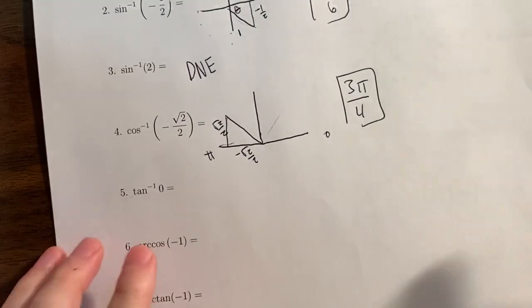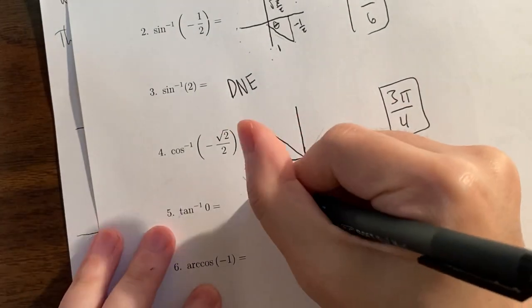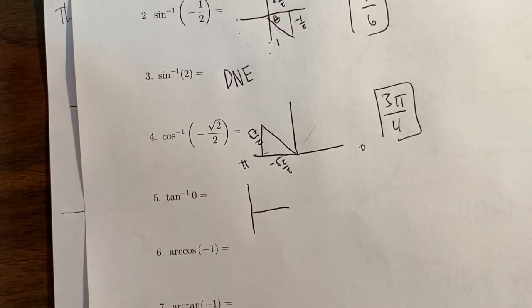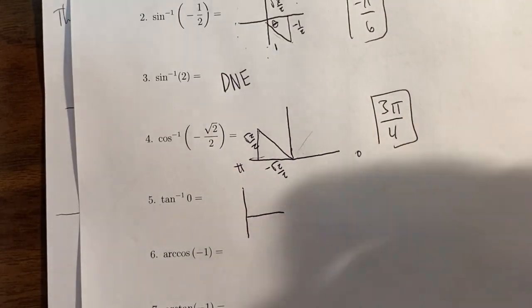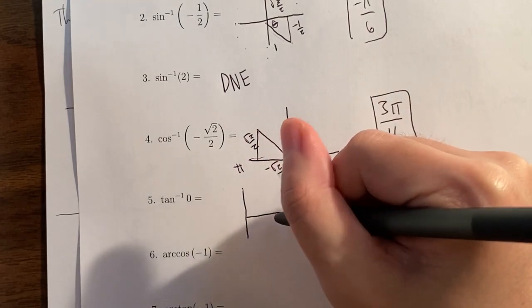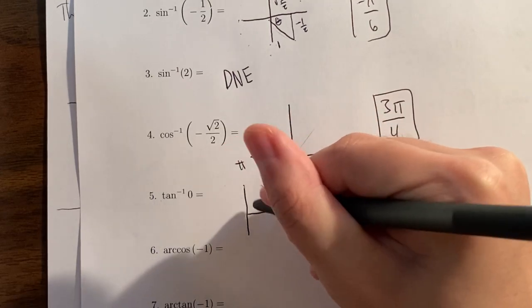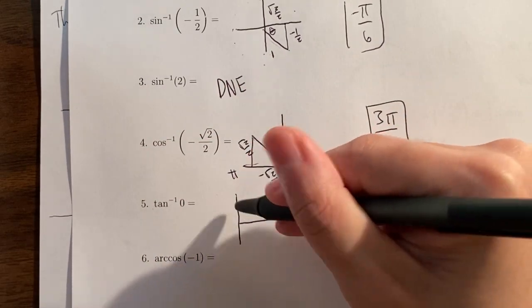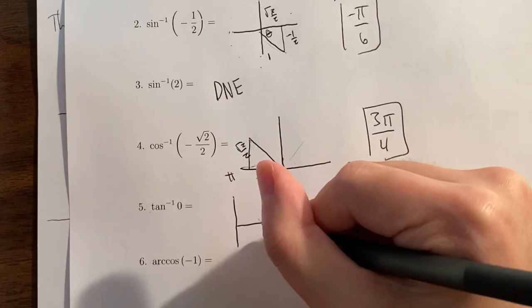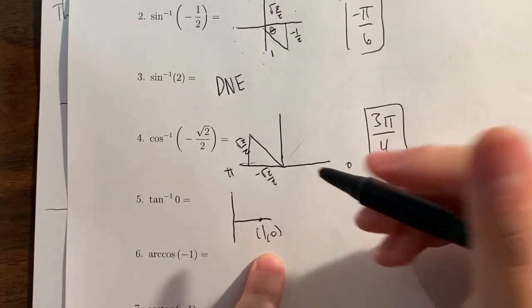For inverse tan of 0: arc tan answers must be between negative pi over 2 and pi over 2, so we draw those two quadrants. Tangent is the y-coordinate over the x-coordinate. Not all answers are triangle angles — some are coordinate axis angles. We want the y-coordinate to be 0, and the angle 0 gives the point (1, 0). Tangent of 0 is 0 over 1, which is 0. So the answer is 0.